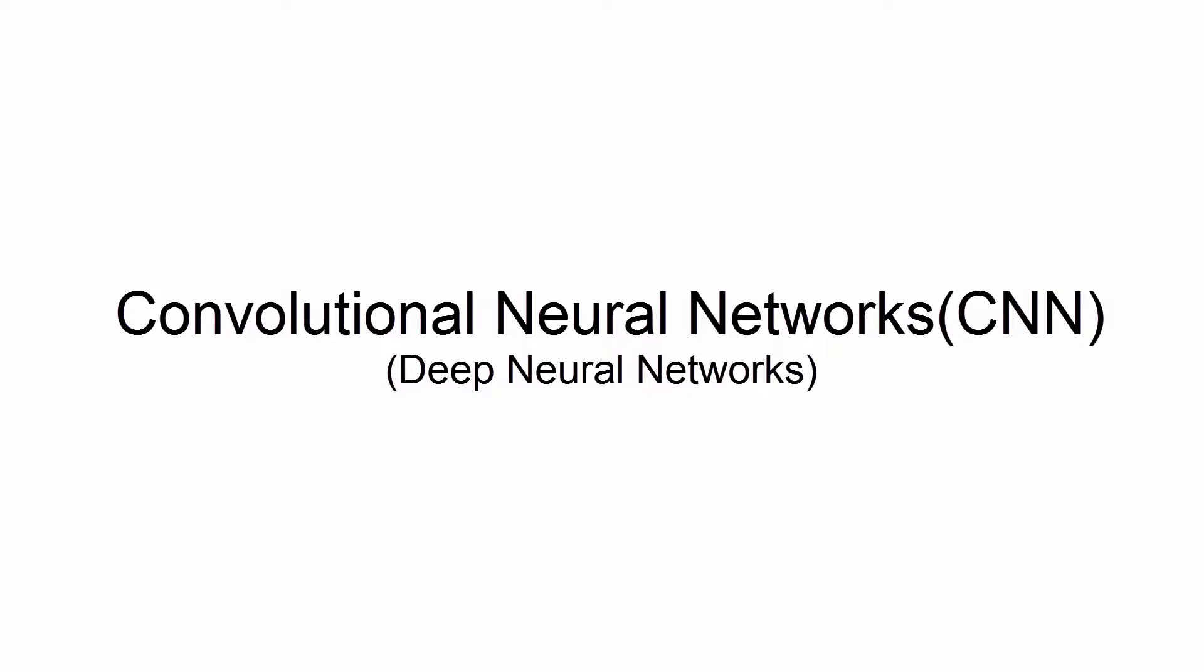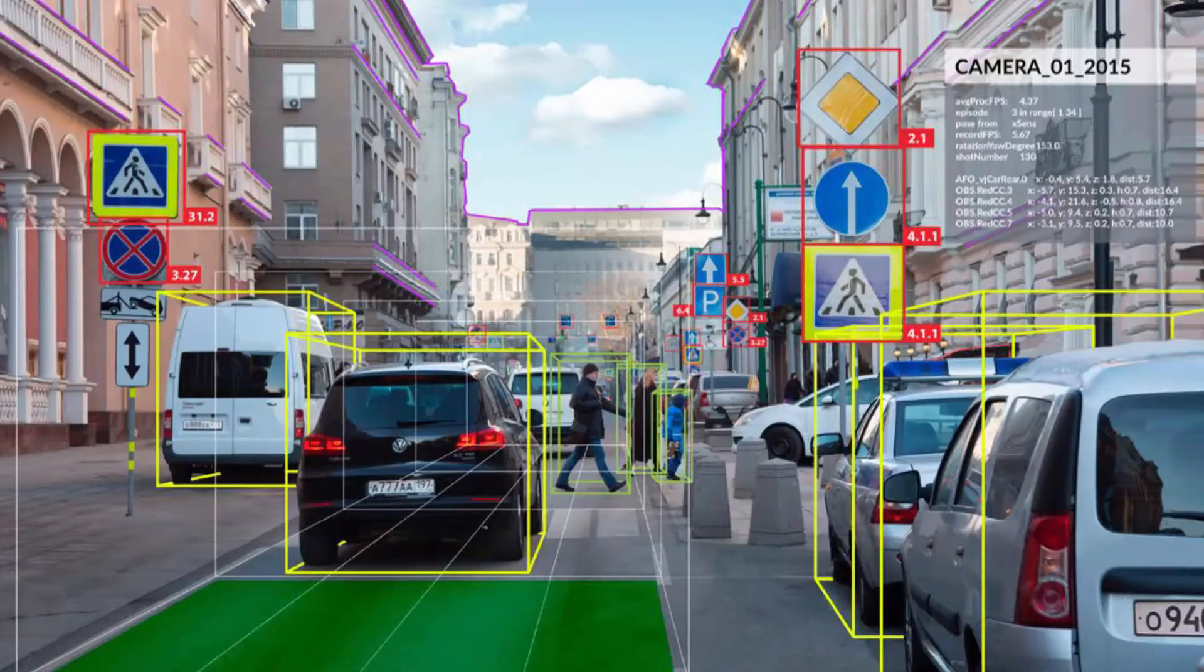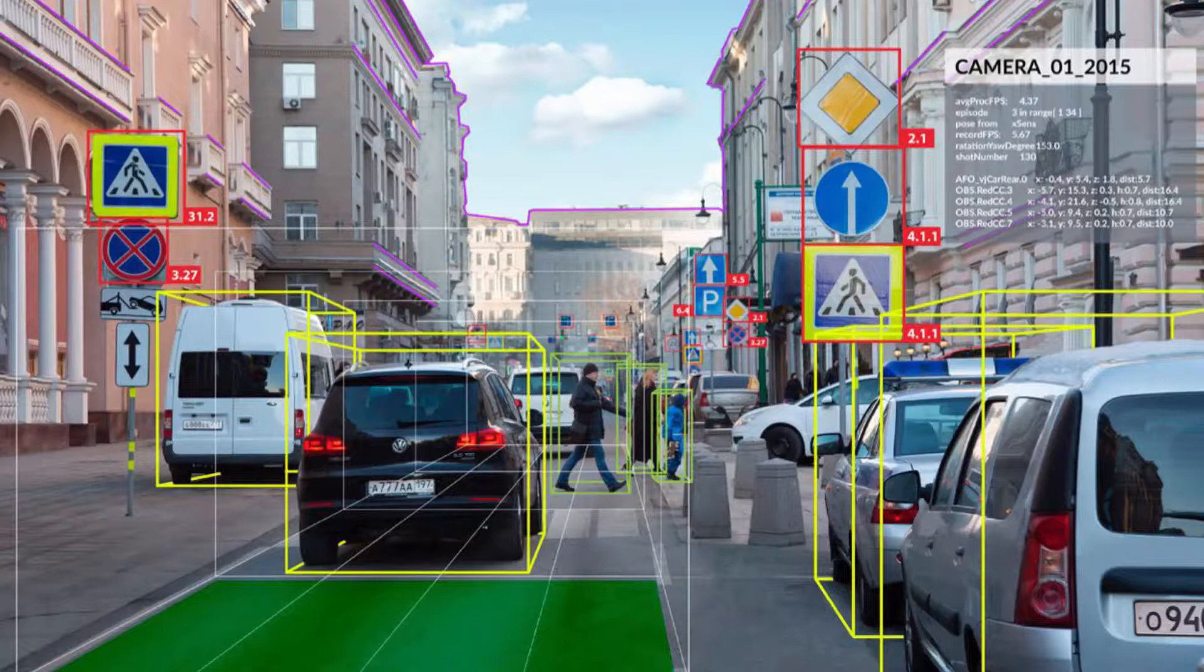These are deep artificial neural networks and they are primarily used to classify images, cluster them, and form object recognition within scenes and videos. We can use these networks to identify different asset classes like a person, car, street signs and more.